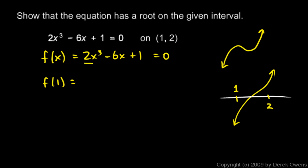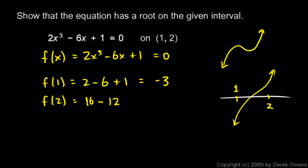f of 1 is just 2 times 1 cubed minus 6 times 1 plus 1. 2 minus 6 plus 1 is negative 3. Then f of 2 is 2 times 2 cubed — that's 16 — minus 6 times 2, so that's minus 12, plus 1. 16 minus 12 is 4, plus 1 is 5.